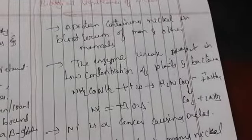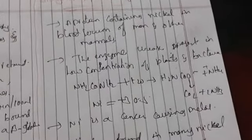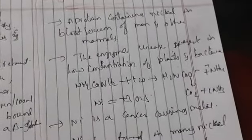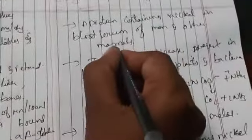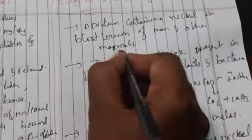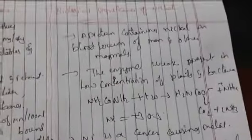Nickel is mainly observed in blood serum of man and other mammals. Thank you.